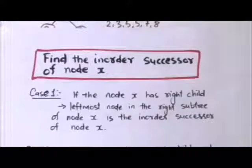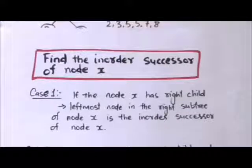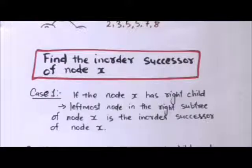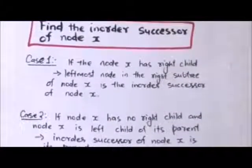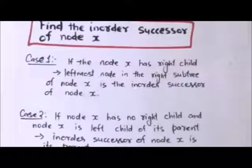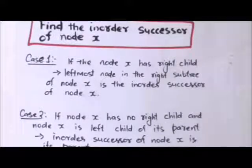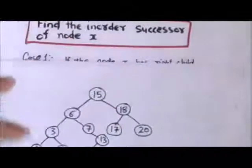Now we have to find the in-order successor of a node X in a binary search tree. There are three cases. First case: if node X has a right child, then the leftmost node in the right subtree of node X is the in-order successor of node X.